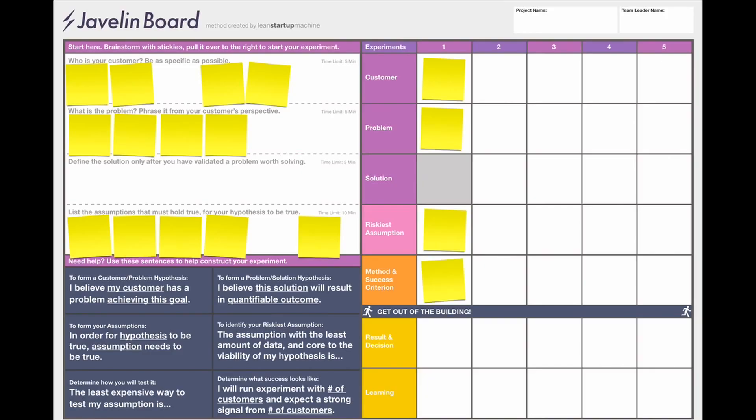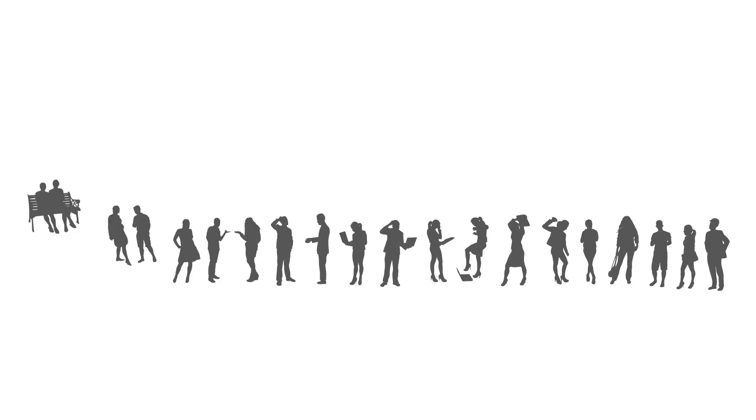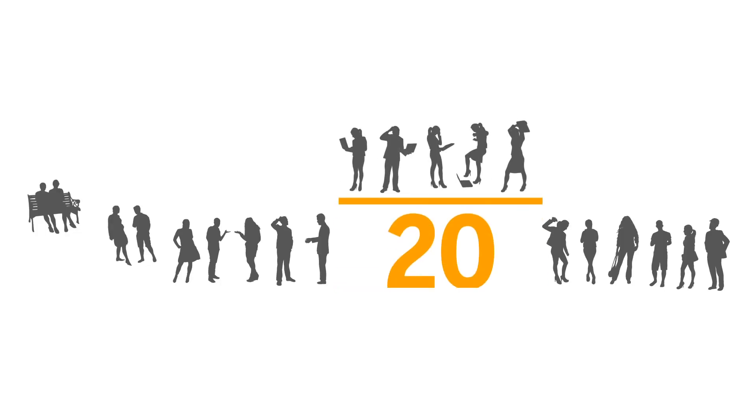No experiment is complete without success criteria — how do we know when we're successful? The success criteria is the minimum amount of validation you need in order to invest more resources, time, and effort into proceeding on the project. You can set the success criteria as a fraction: out of this many people that I talked to, I need this many to exhibit a certain action, behavior, and mentality.